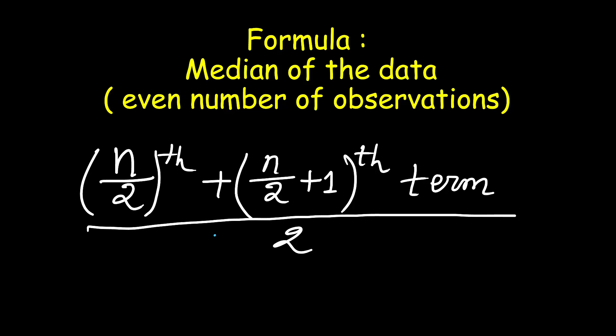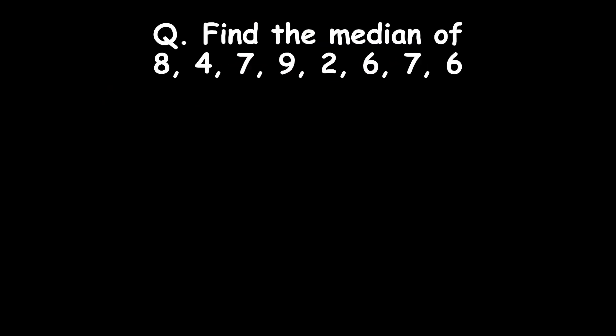Now let us take one example. Here the data is: 8, 4, 7, 9, 2, 6, 7, and 8 — so there are 8 number of observations.